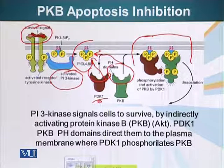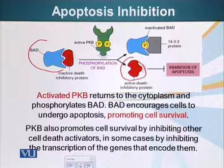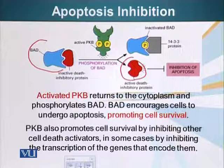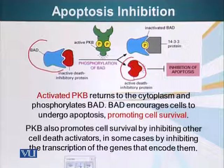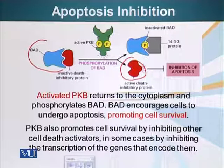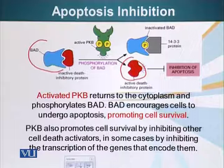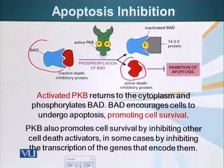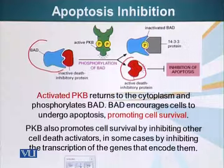Receptor tyrosine kinases, when they bind their ligand — which is right here — they cross-phosphorylate each other. We have seen that they activate PI3 kinase. PI3 kinase phosphorylates PIP2 and generates a PIP3 molecule right here. This PIP3 molecule can bind proteins which have a pH domain.